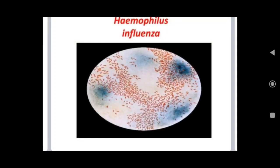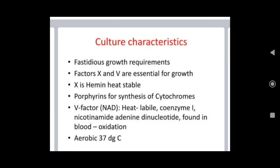Haemophilus influenzae has fastidious growth requirements — factors X and V are essential for growth. Factor X is hemin, a heat-stable porphyrin required for synthesis of cytochromes. Factor V is heat-labile NAD (nicotinamide adenine dinucleotide), found in blood. Growth occurs under oxidation and aerobic conditions at 37 degrees Celsius.